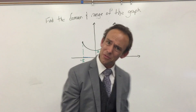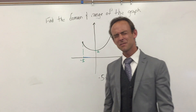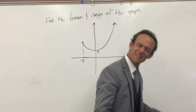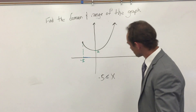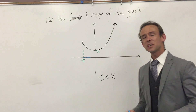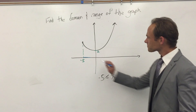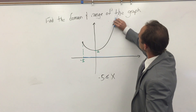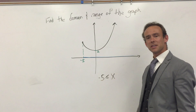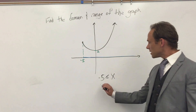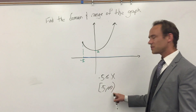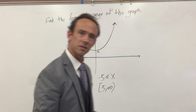Here's the thing that always trips people up: do you see that arrow? That arrow means this graph goes on forever — for all eternity. So X has to be greater than or equal to negative 5 and it can go on forever. In interval notation, that's negative 5 comma infinity with a bracket on the negative 5 side and a parenthesis on the infinity side, because you can never actually be infinity.